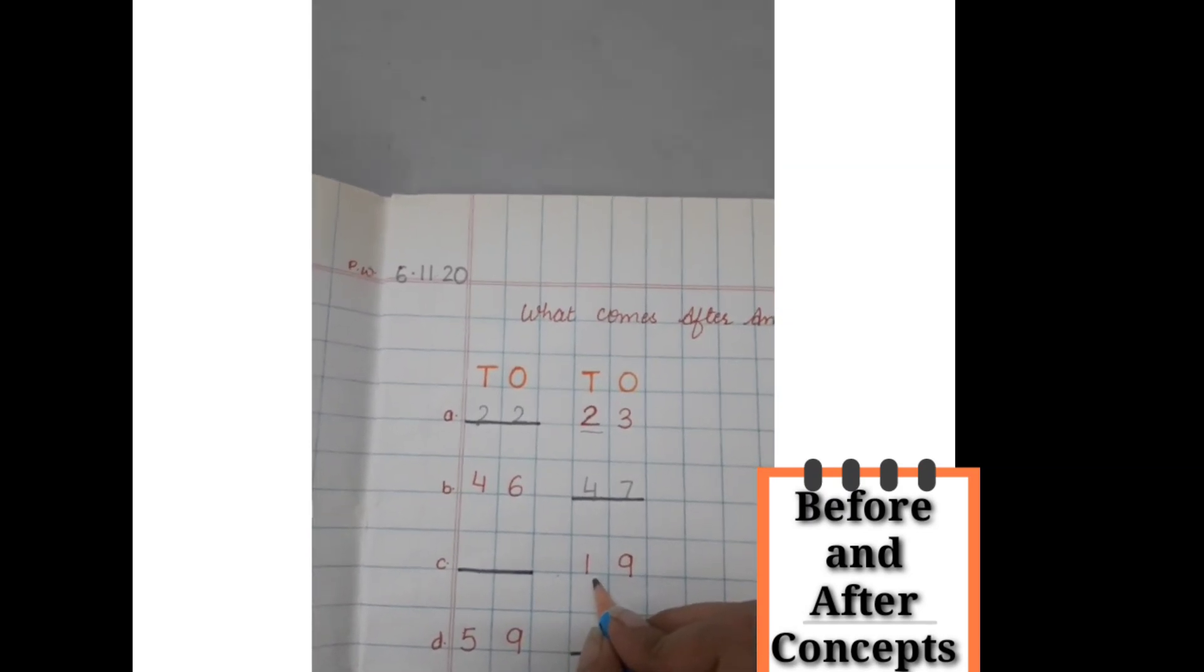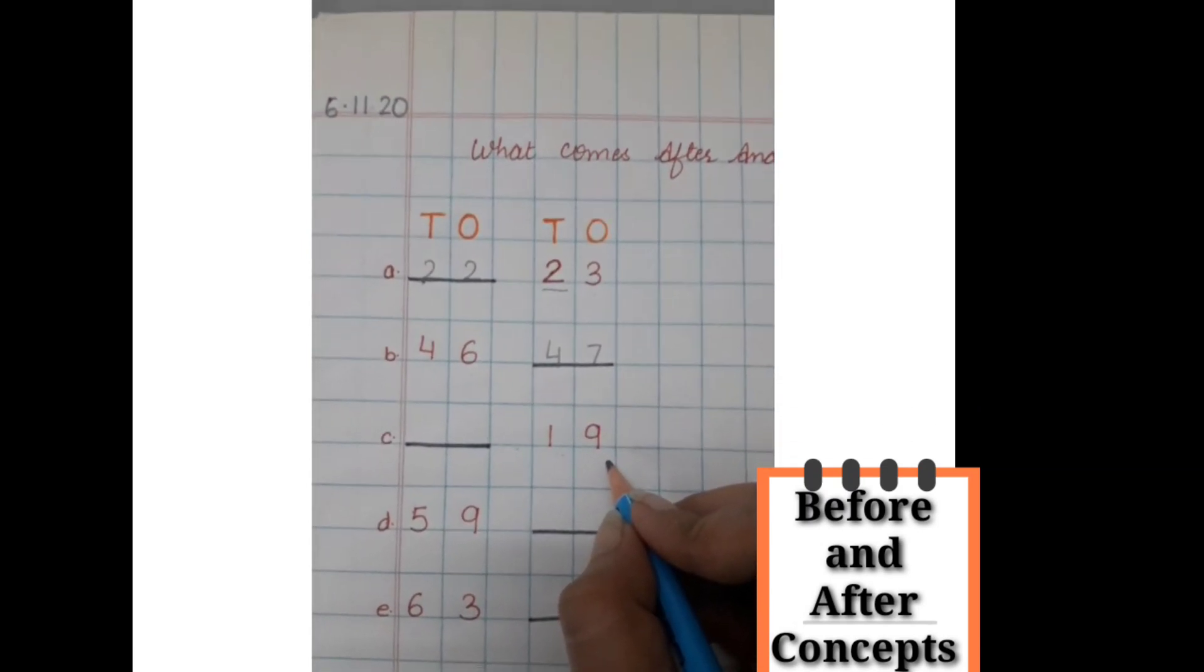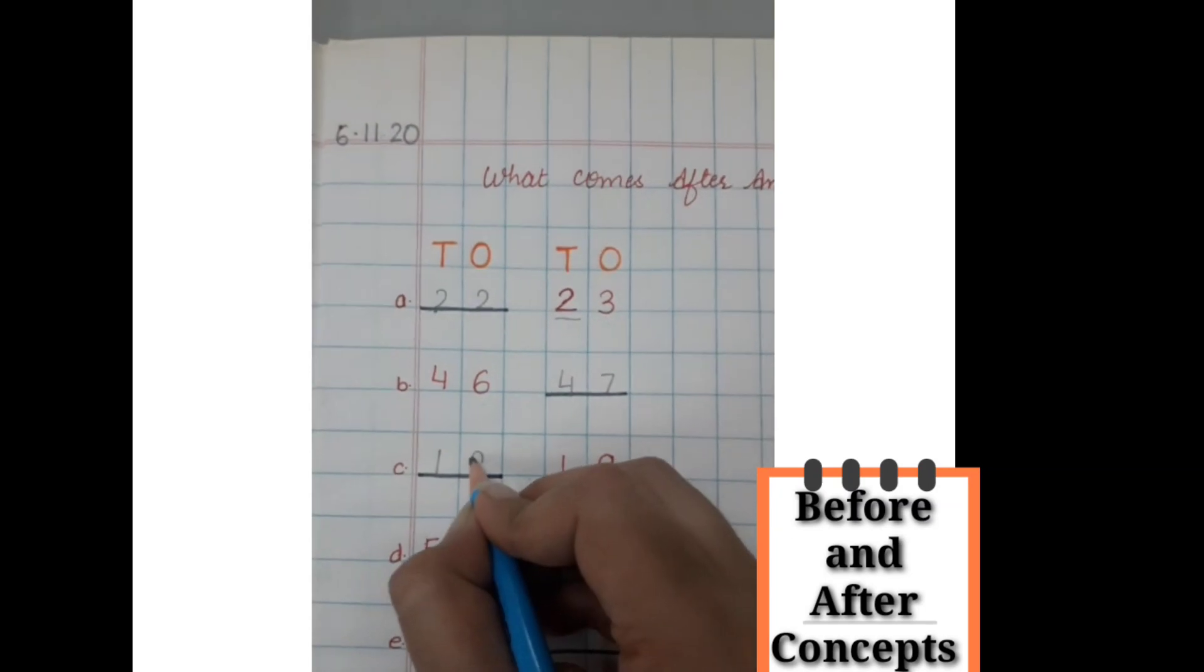Now we have here number 19. So what comes before 19? 18.